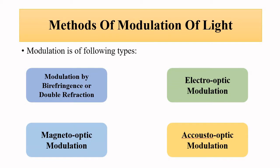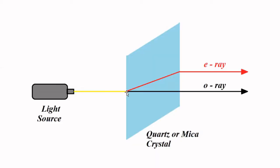In this video we'll be discussing the wave plate method of modulation of light. It is a slight modification of the double refraction or birefringence method. In double refraction, when light is focused on a doubly refracting crystal — here we consider a uniaxial crystal with one optical axis and two principal refractive indices — light gets split into two parts, because each component faces a different refractive index: η_e and η_o.